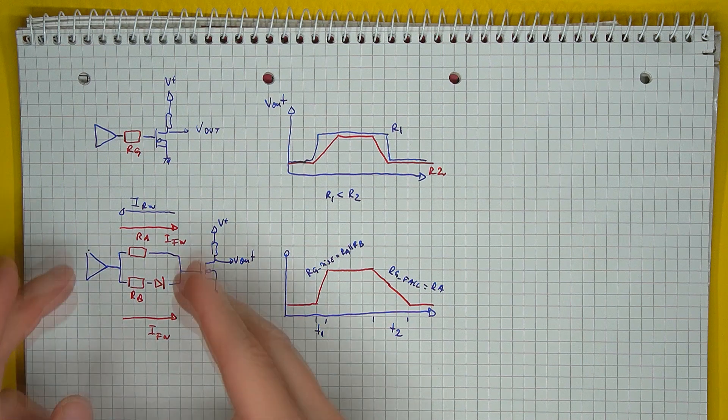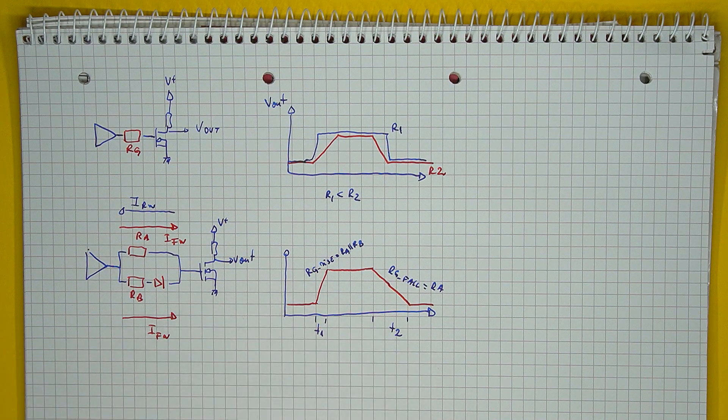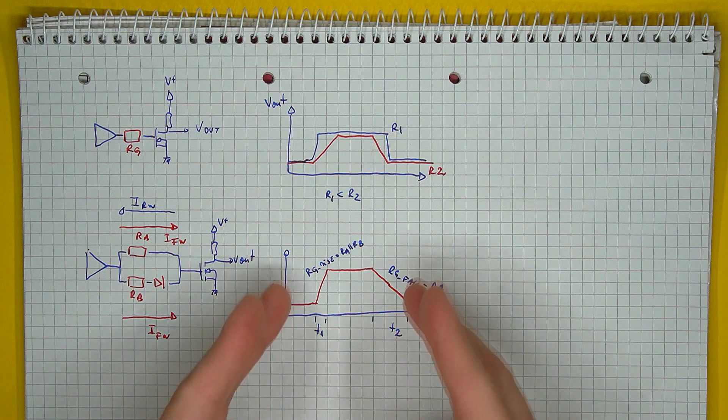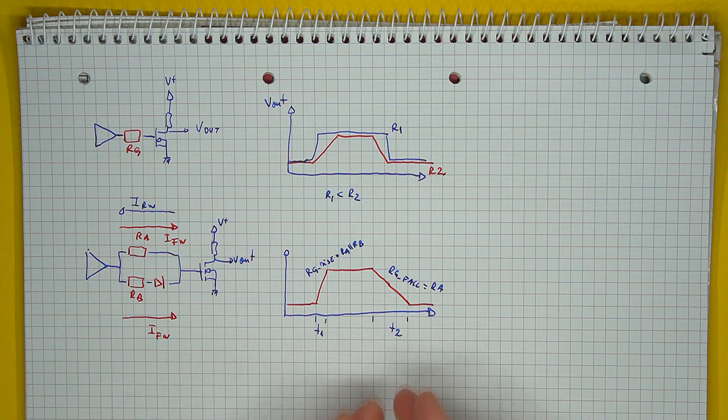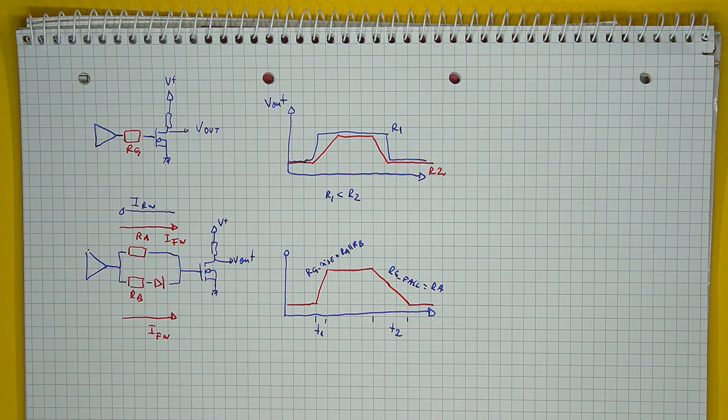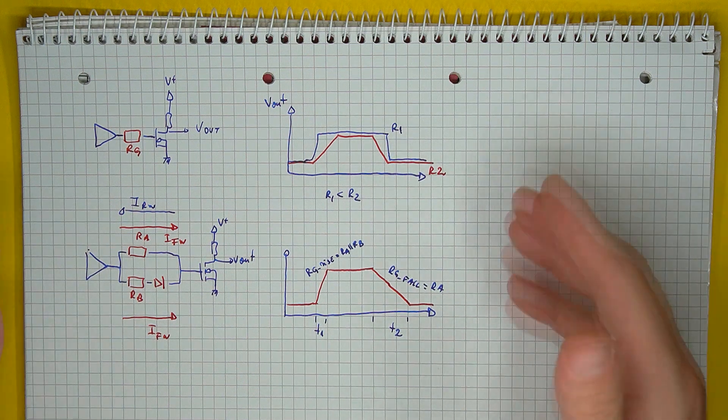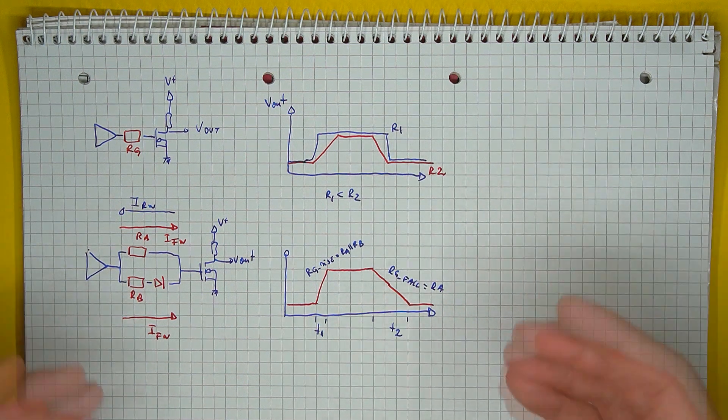Thus, you can get separate control over both of the transition edges. So, based on how the resistor values are chosen, where exactly the diode is put, and into what direction, you can independently control the rise and fall times of the switch. But for the sake of simplicity, today I will be using the single resistor approach.